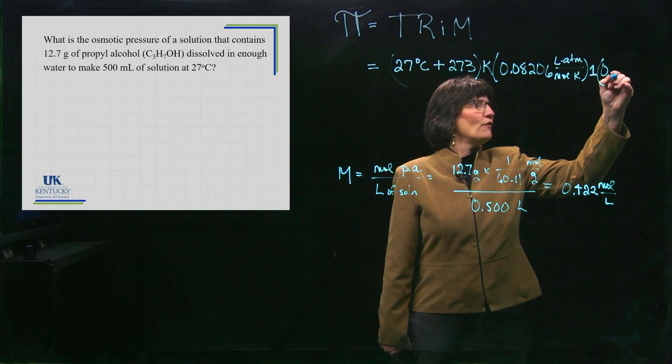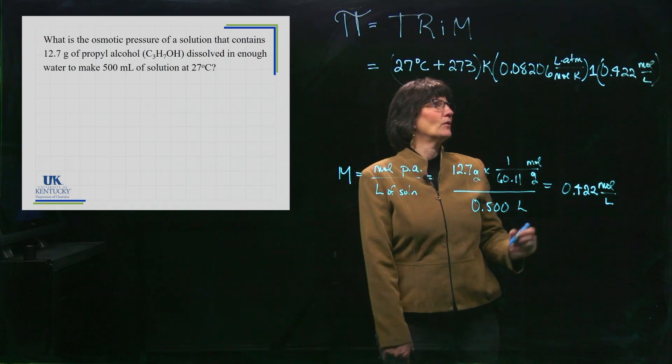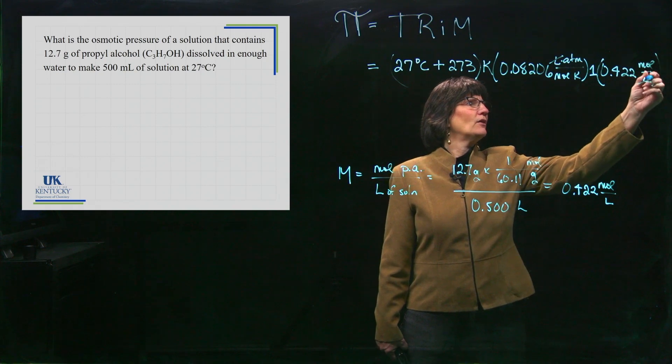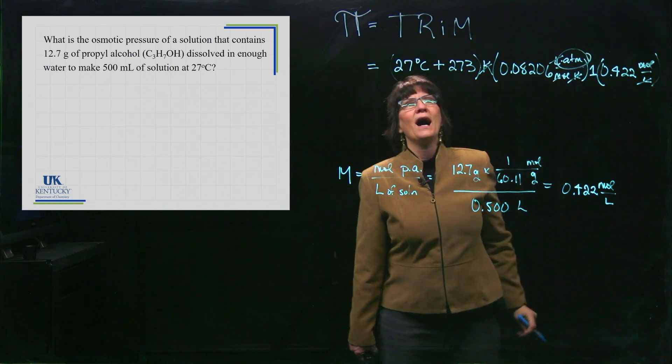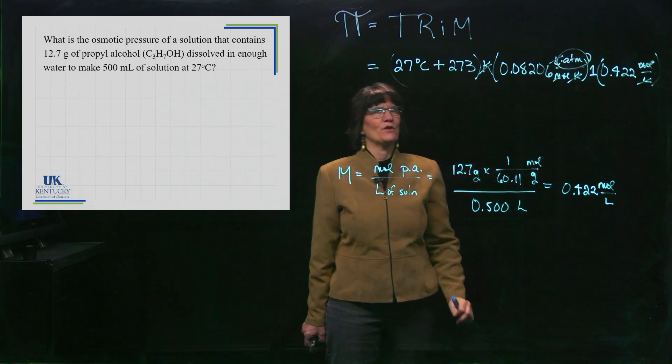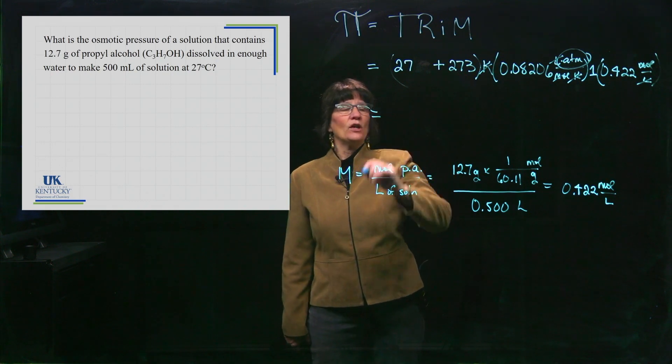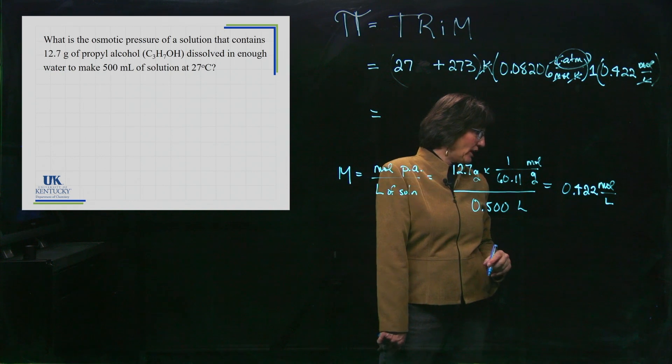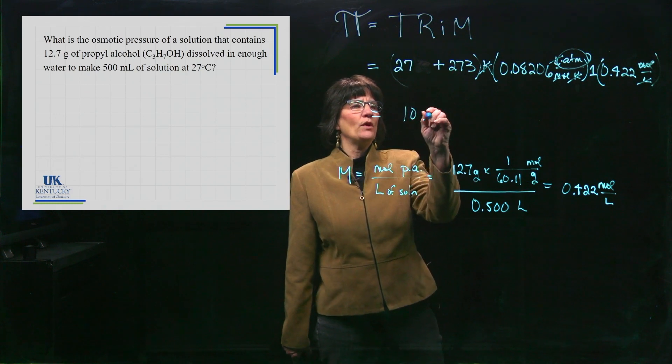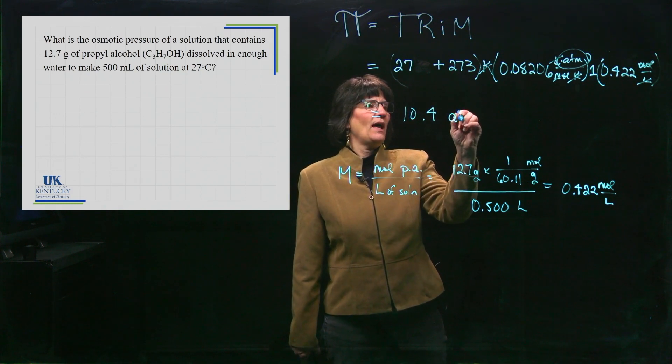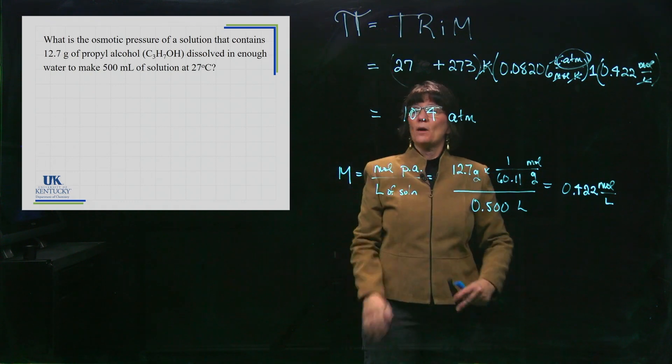0.422 moles per liter. Let's watch our units. There's a liter and there's a liter. There's a mole. There's a mole. There's a Kelvin. There's a Kelvin. And what am I left with? I am left with the atmospheres. That degree Celsius went away when I added 273. So that is going to give me an osmotic pressure equal to 10.4. 10.4 and what's the units? Atmospheres. So that is using the information to get osmotic pressure.